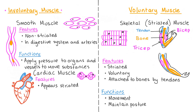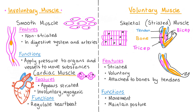Cardiac muscle cells are also involuntary but are only found in the heart. Unlike skeletal muscle cells, cardiac muscle cells also appear stripey or striated. The cells of cardiac muscle are described as myogenic, which means that the impulse originates from the heart and not externally like with voluntary muscles. This allows our heart to beat continuously and tirelessly in a regular rhythm to pump blood around our body.